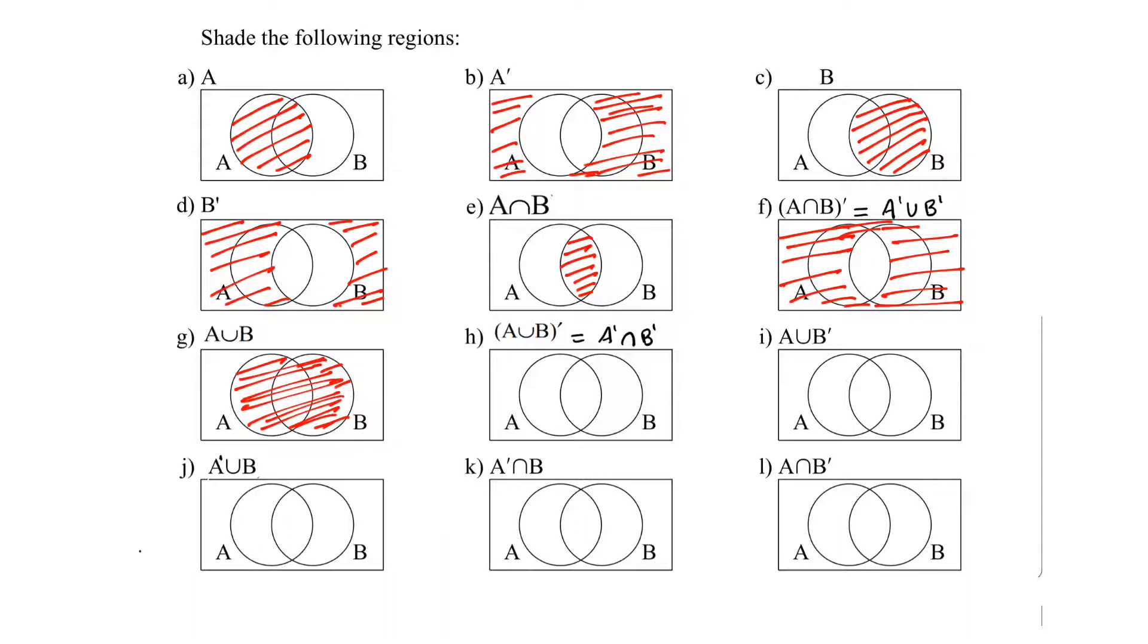Moving forward we have bracket A union B dash or A union B not. What is not in A union B? This whole part outside the circle. A union B not is the same as not A intersects not B. So we will shade the outside part.